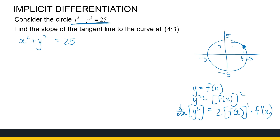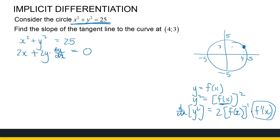Differentiating the left-hand side, I've got 2x, plus the derivative of y² is 2y — but we don't stop there because y is a function of x. So we still need to multiply by dy/dx from the chain rule. And the derivative of 25 is 0.